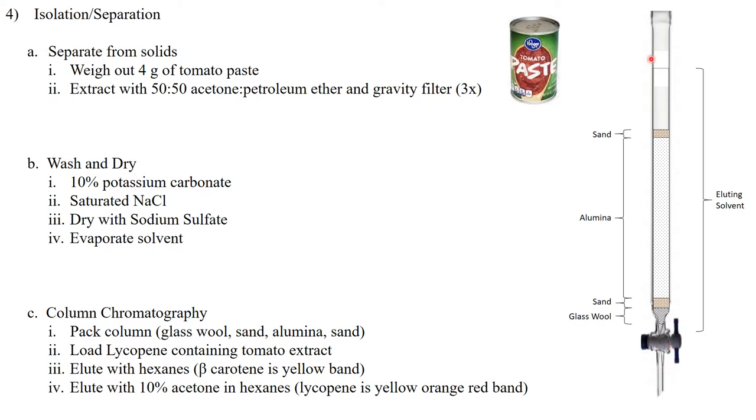So this is just a big glass column. And in this case, we're just going to use a burette, which is normally used for titrations. We're going to put some glass wool at the bottom to make sure that nothing of small particles from above can get into this valve down below.